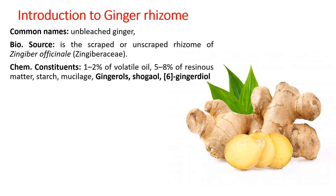The major chemical constituents are gingerol, shogaol, and gingerdiol. These components give a pungent taste to the ginger. The other components include 1–2% of volatile oil, which gives ginger its fragrance. Various resinous materials are also present, constituting around 5–8% of the dry weight. Besides, starch and mucilage are also present in ginger.